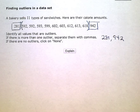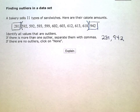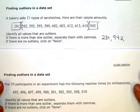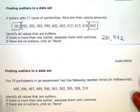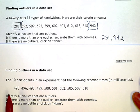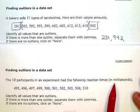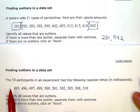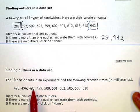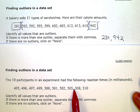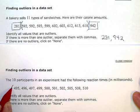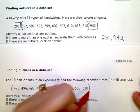Now here's another data set. I have 10 participants in an experiment that had the following reaction times in milliseconds. I'm seeing 490s, high 400s, then 500 — we stay in the low 500s. There's really nothing that's outside of this kind of cluster here.